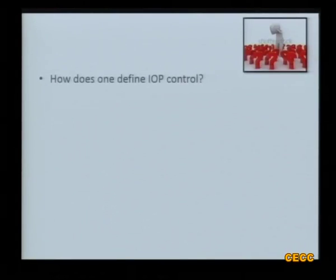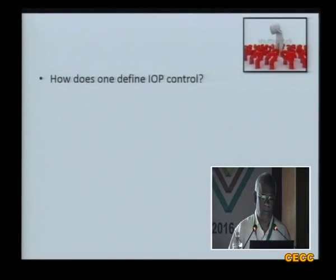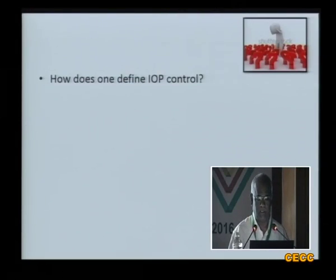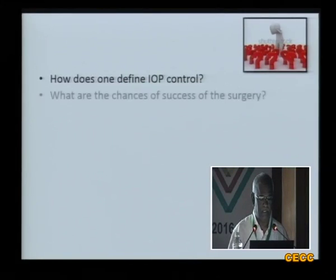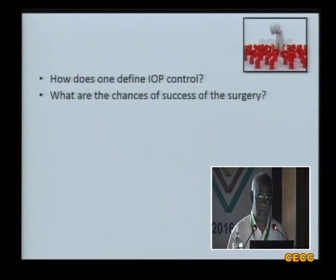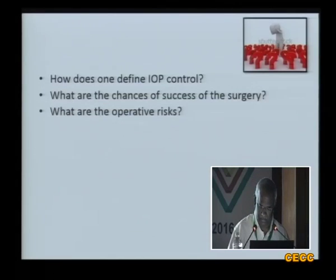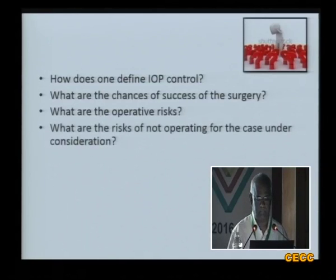What are the other things we have to take into consideration? How does one define intraocular pressure control? It depends upon the stage of the disease and the progression. What are the chances of success of the surgery in a particular situation for the patient? And what are all the operative risks? It's not the same for all patients. And what are the risks of not operating for the case under consideration?